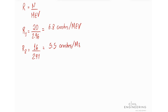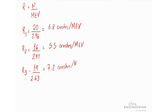For intersection three: 19 accidents divided by the MEV of 2.63 gives 7.2 crashes per million entering vehicles. For intersection four: 15 accidents divided by the MEV of 2.46 gives 6.1 crashes per million entering vehicles.